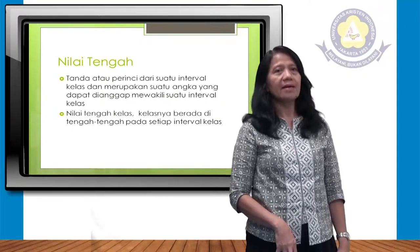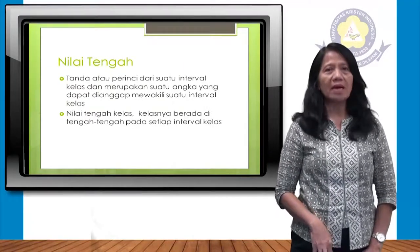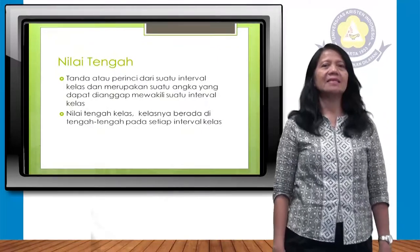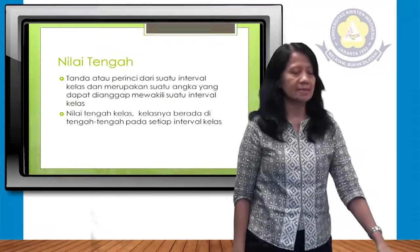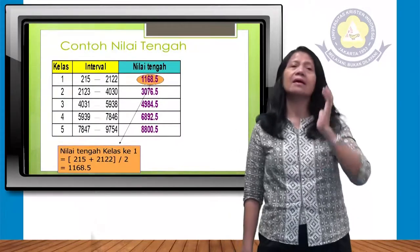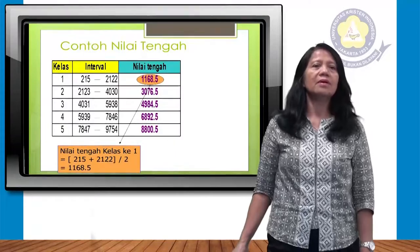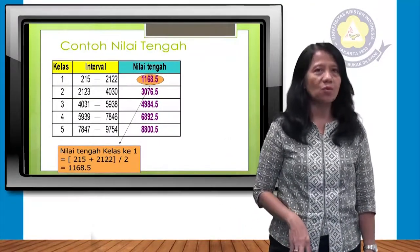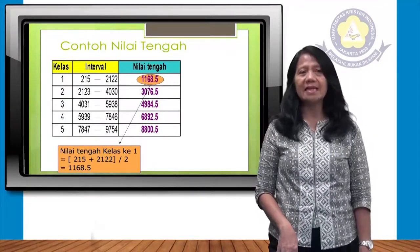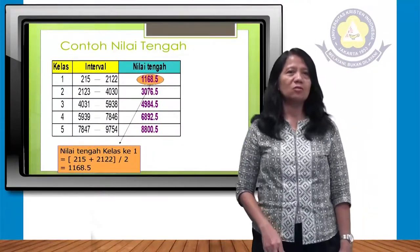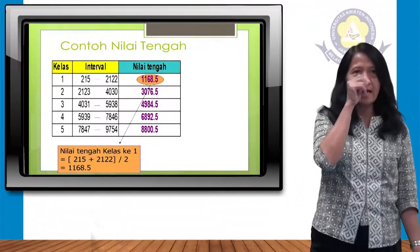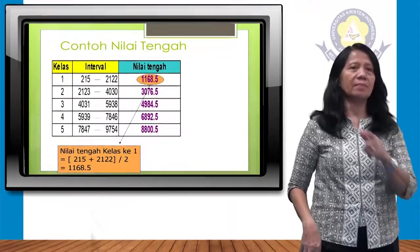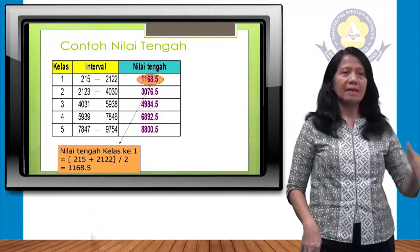Nilai tengah adalah tanda atau perinci dari suatu interval kelas, merupakan angka yang dapat dianggap mewakili suatu interval kelas. Nilai tengah berada di tengah-tengah pada setiap interval kelas. Contoh: 215 sampai 2.122 dibagi 2, hasilnya 1.168,5. Kelas kedua: (2.123 + 4.030) ÷ 2. Kelas ketiga: (4.031 + 5.938) ÷ 2. Begitu sampai 5 kelas.